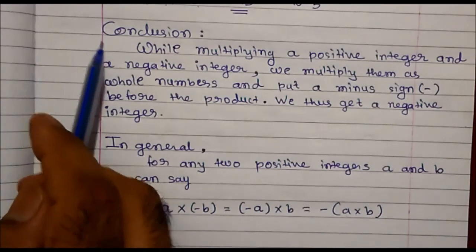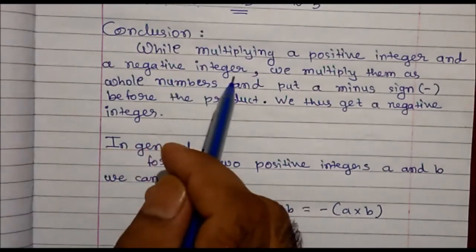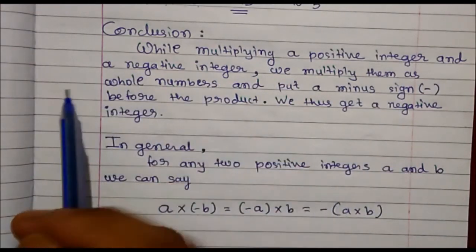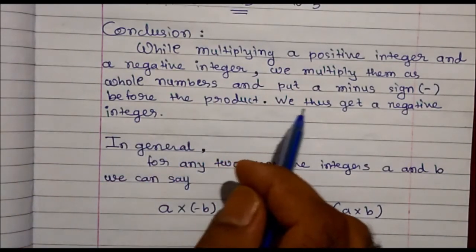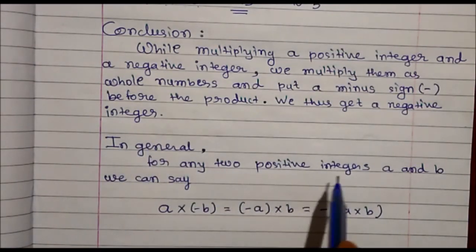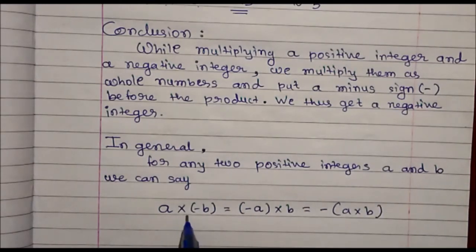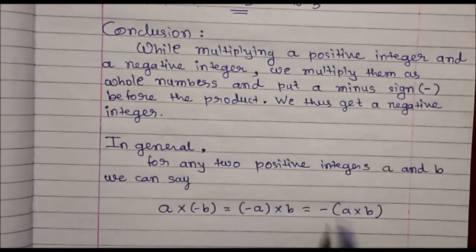Let's conclude: while multiplying a positive integer and a negative integer, we multiply them as whole numbers — normal multiplication — and put a minus sign before the product, giving us a negative integer. In general, for any positive integers a and b, we can say that a multiplied by minus b, or minus a multiplied by b, is nothing but a into b with a minus sign.